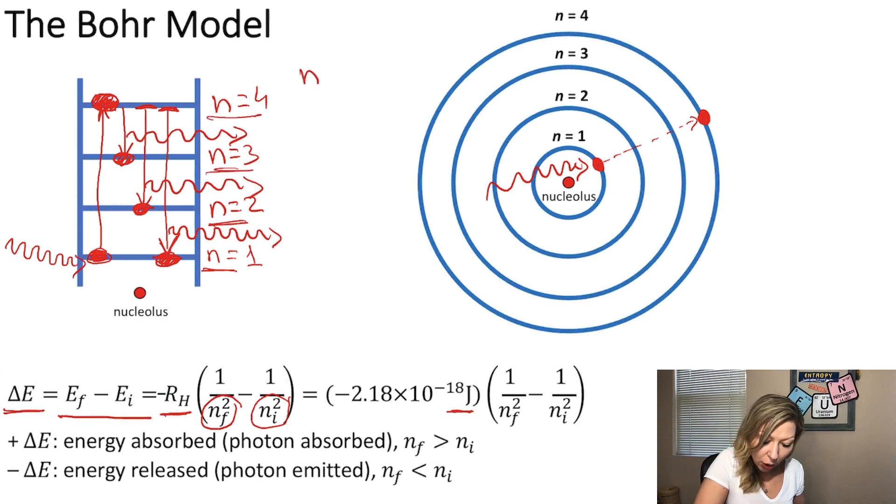So for example, when we are going from N equals 4 to N equals 1, my N initial is going to be 4 and my N final is going to equal to 1. Now, I also said that the energy is the lowest at the ground state at N equals 1 state. And actually, the energy has a negative sign.